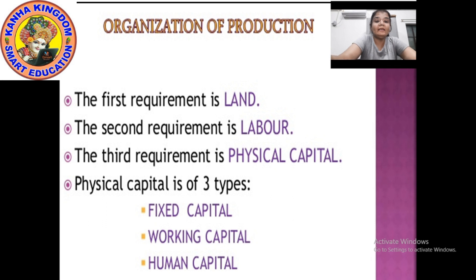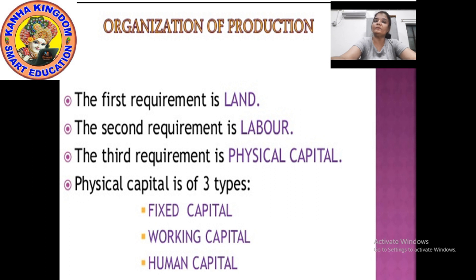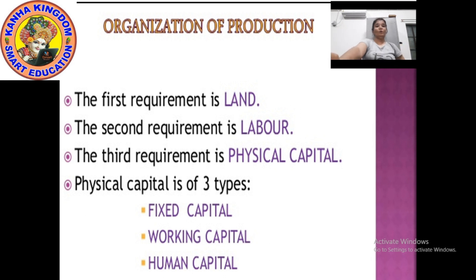So while explaining the chapter, please pay attention very carefully. For the organization of production, which four requirements are there? Land, labor, physical capital and human capital. And which are the three factors of physical capital? The three factors are fixed capital, working capital and human capital — but you can count it as fixed capital and working capital.